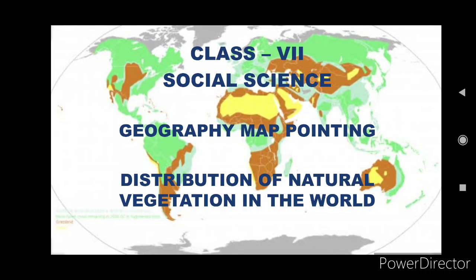Hi students, welcome back to my geography class. I am Shumiron Sir, and today I will discuss the map pointing part of geography chapter number six, which you have read in your textbook — the distribution of natural vegetation. In this video, we will discuss the location of natural vegetation in the world, along with the tropical and temperate grassland.